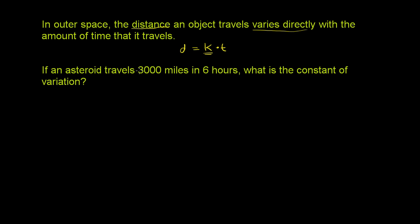If an asteroid travels 3,000 miles in six hours, what is the constant of variation? The distance is 3,000, so we have d equals 3,000 miles.